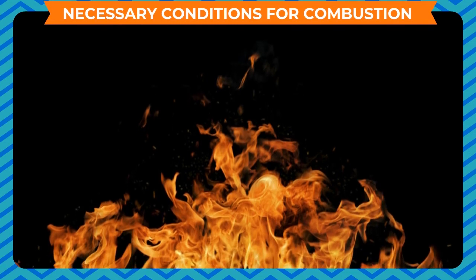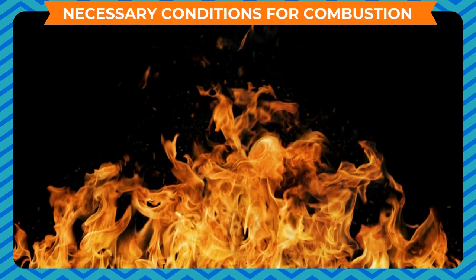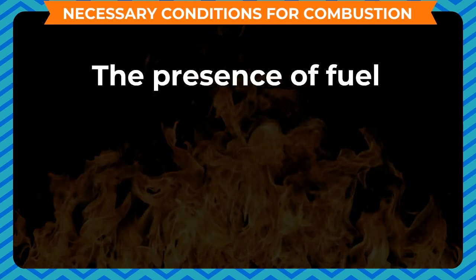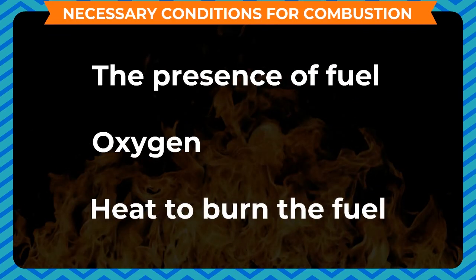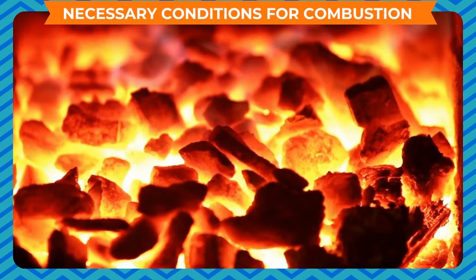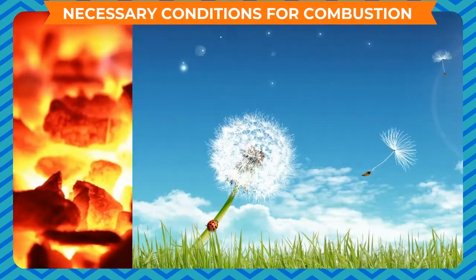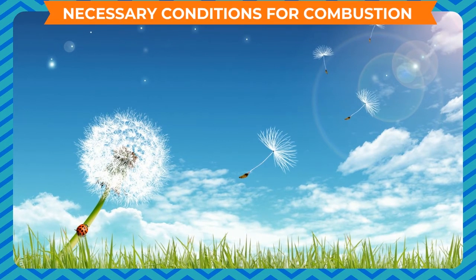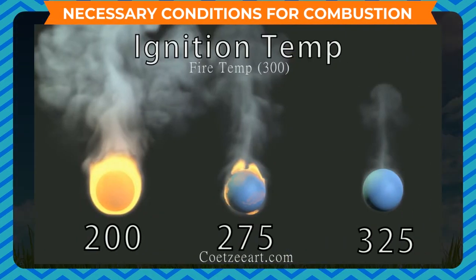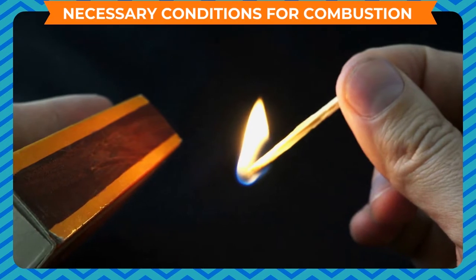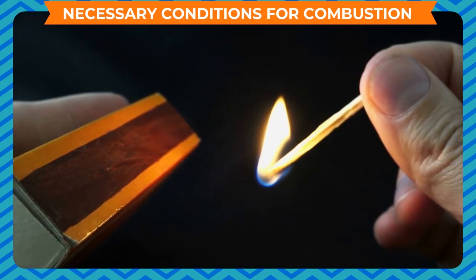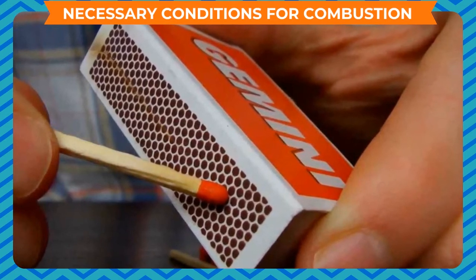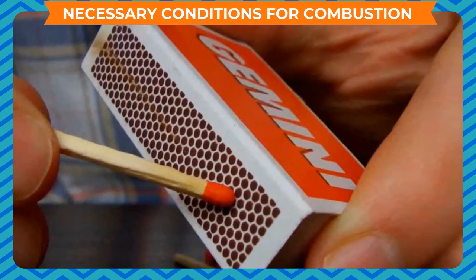There are three conditions necessary for combustion: the presence of fuel, oxygen, and heat to burn the fuel. A fuel is a substance that easily catches fire and produces heat. Oxygen is the gas without which anything would not burn. Heat is necessary to raise the temperature of a substance to its ignition temperature. Ignition temperature is the lowest temperature at which a substance catches fire. A matchstick starts burning when it is rubbed on the sides of the matchbox, as friction is produced, which raises its temperature to the ignition temperature.